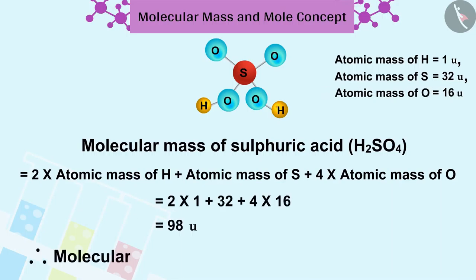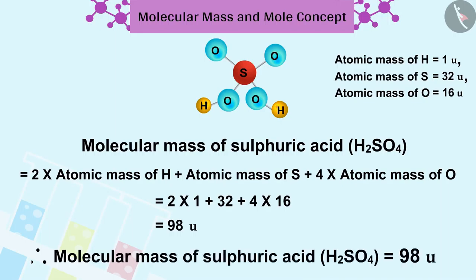The molecular mass of sulfuric acid, H2SO4, is 98U.